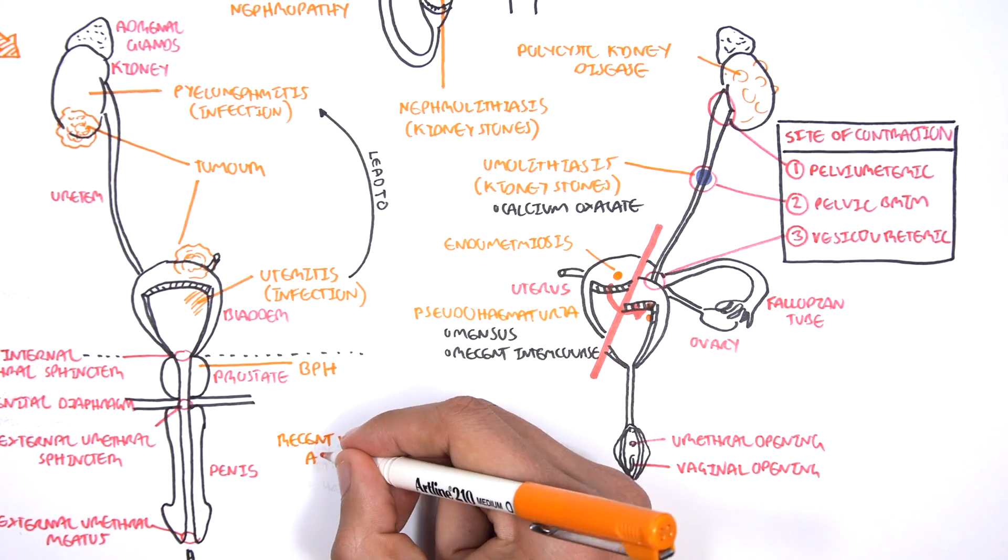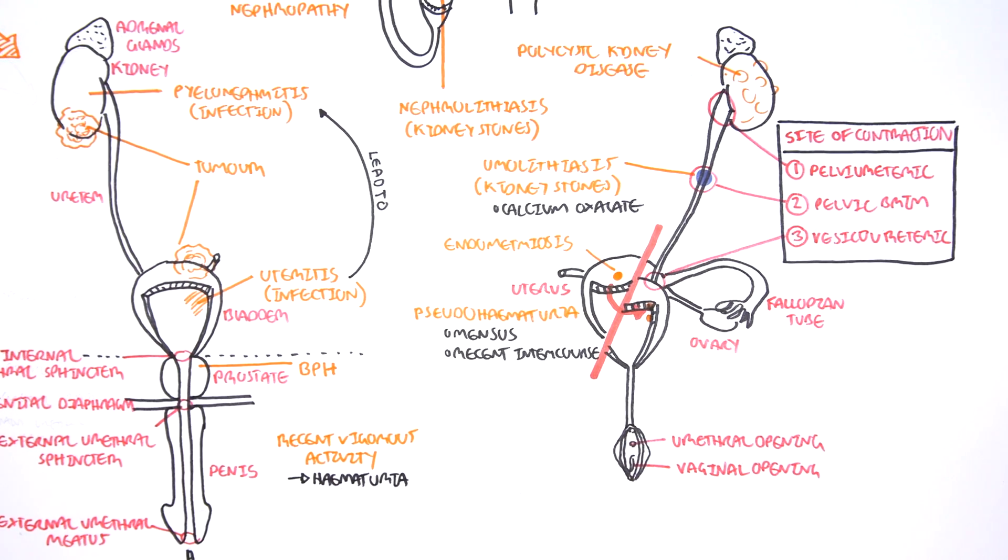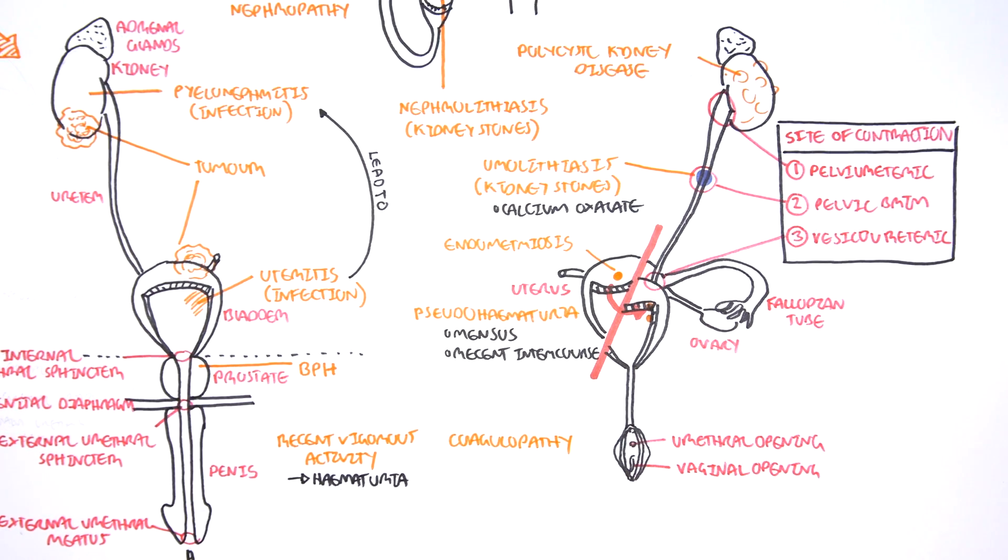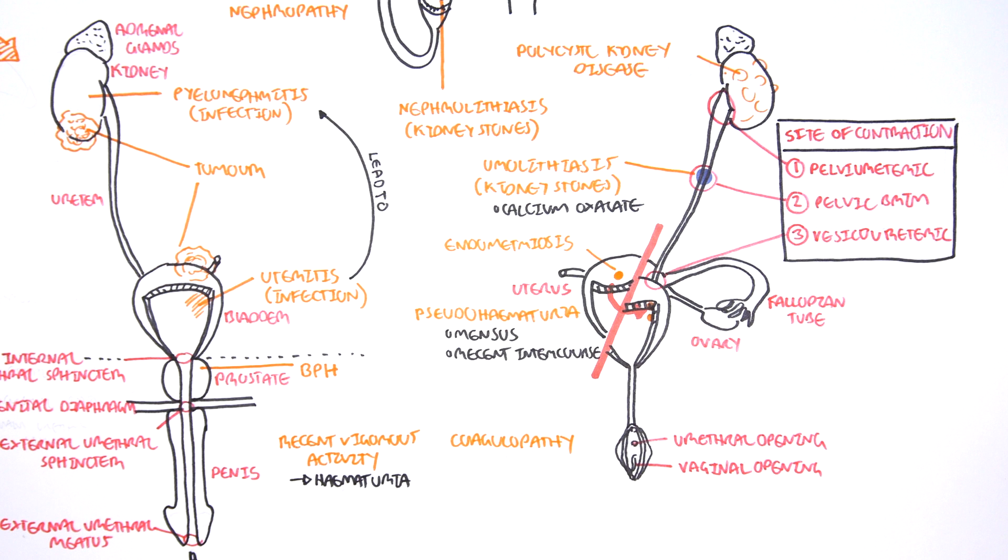Recent vigorous activity can induce hematuria. And lastly, coagulopathies can also cause hematuria because the person is unable to clot properly. Thus, you can have presence of blood in the urine. So that was some of the causes and differential diagnoses of hematuria.